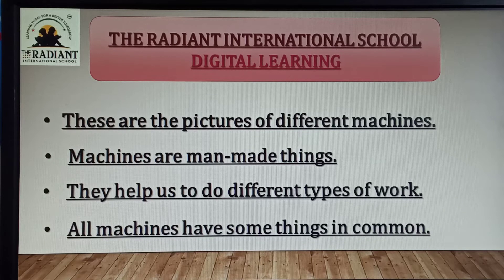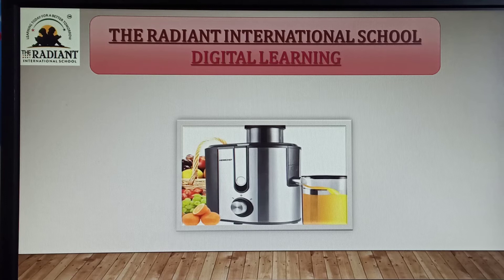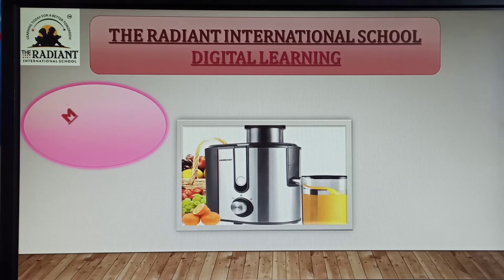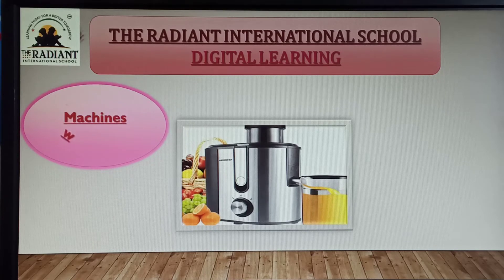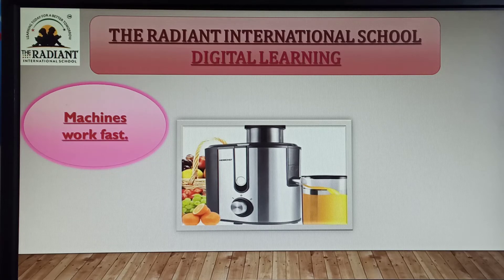Now next. देखो, यह हमारा juicer machine है. अब उसमें कौन सी चीज़ common होती है? Machines work fast. Machines से क्या होता है? हमारा जो work होता है वो एकदम फटाफट से हो जाता है.